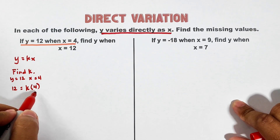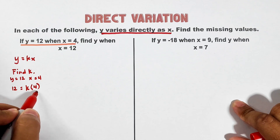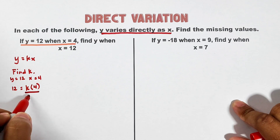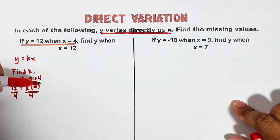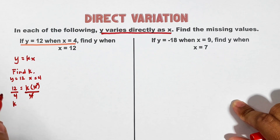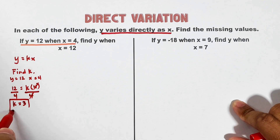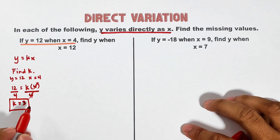Y is replaced by 12, k stays as k, and x is substituted with 4, giving us 12 = 4k. We divide both sides by 4 to cancel the 4, and we get k = 12 divided by 4, which is equal to 3. This k is the constant of variation.